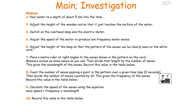Place a meter ruler at right angles to the waves shown in the pattern on the card and measure across as many waves as you can, then divide that length by the number of waves — this gives the wavelength. Record this value in the table. Then count the number of waves passing a point in the pattern over 10 seconds and divide the number of waves counted by 10 to get the frequency. Record this value also.